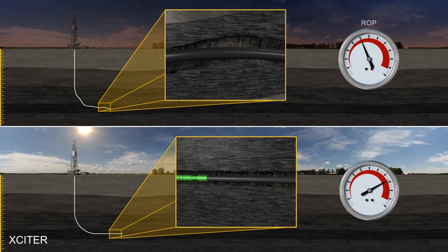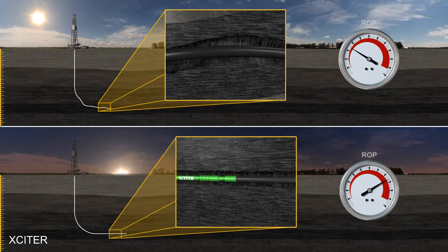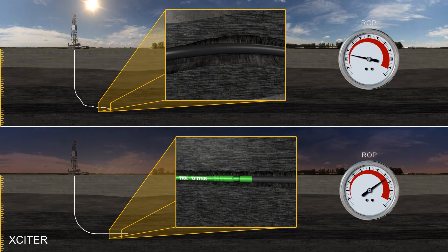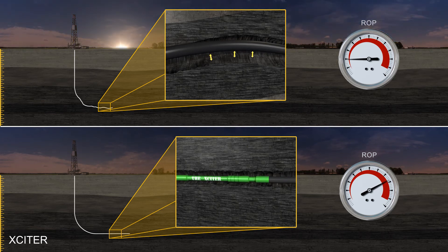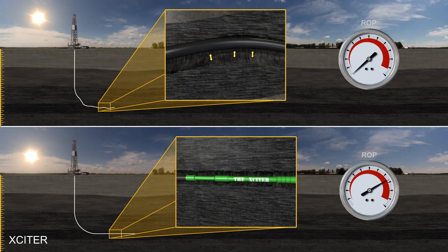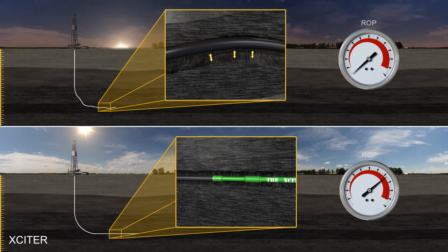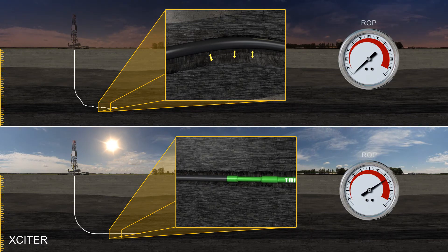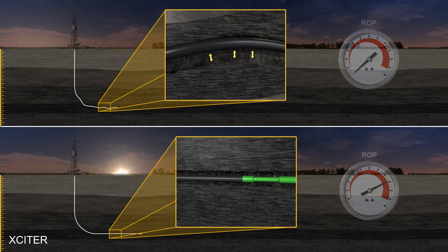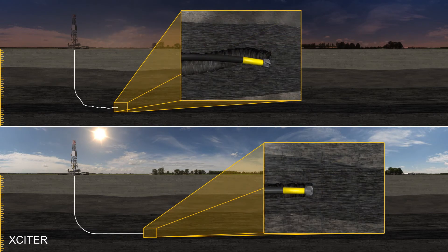Drilling depleted or under-pressured zones presents another problem known as differential sticking. This occurs when the hydrostatic pressure exceeds the formation pressure, and the BHA can become sucked into the side of the wellbore, effectively reducing ROP to zero. The high-frequency vibration of the Exciter tool resonating through the BHA will prevent this time-consuming and expensive problem.